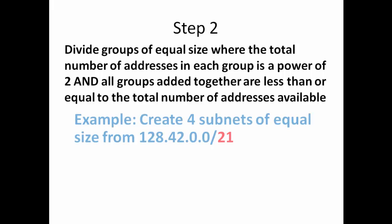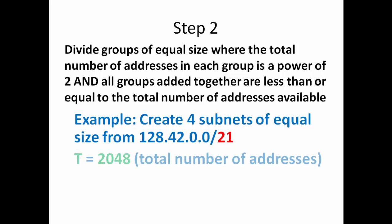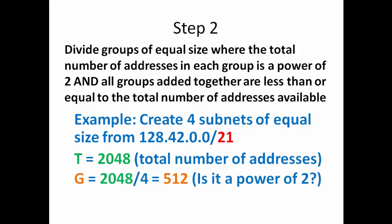So what does that mean? In our example of creating four subnets of equal size, we have 2,048 total. How many groups can we make? We want four groups. If we take 2,048 and divide it by 4, we come up with our G or our group of 512.